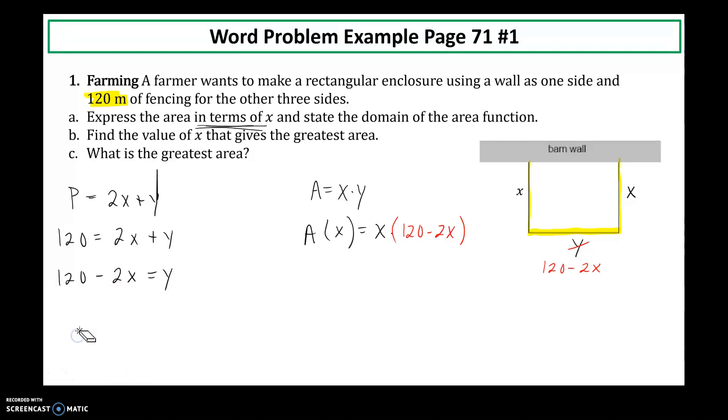The second part says list the domain. The domain are all the possible values for x. We're talking length here. So I know that I cannot have a side length of 0. So 0 is the smallest it can be. My other restriction is going to come from the other side length. So I know that this side length also cannot equal 0.